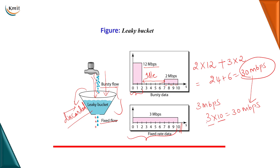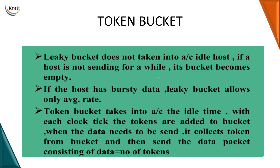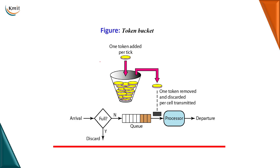What is the problem with leaky bucket algorithm that we are going for token bucket algorithm? The problem is whenever the host is idle, it is generally wasting the bandwidth — it has time but it is not sending data. So we have to credit the host for its idle time. In the token bucket algorithm, leaky bucket does not take into account the idle host. What we do is credit the host for its idle time by adding tokens — for every second the host is idle, we add a token. For example, for 10 seconds if it was idle, 10 tokens will be added into the bucket.